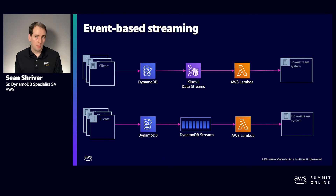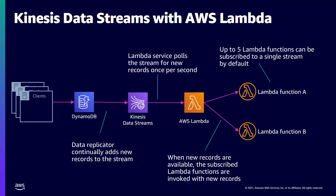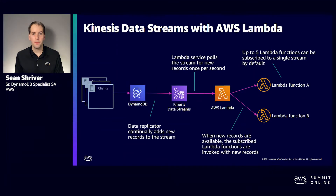One less important difference: DynamoDB Streams retains changes for 24 hours, but Kinesis Streams can retain data for a year if you're willing to pay for it. You may be wondering why customers use Kinesis Data Streams for DynamoDB. There are many good reasons, primarily the entire ecosystem built around Kinesis Data Streams — you can connect a Kinesis stream to Kinesis Data Analytics for streaming queries such as aggregations, or to Kinesis Data Firehose for replication into DynamoDB or Elasticsearch. That's just the tip of the iceberg.